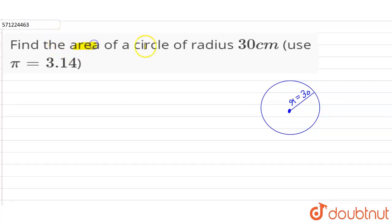have to find the area of a circle of radius 30 centimeters. Use π equals 3.14.